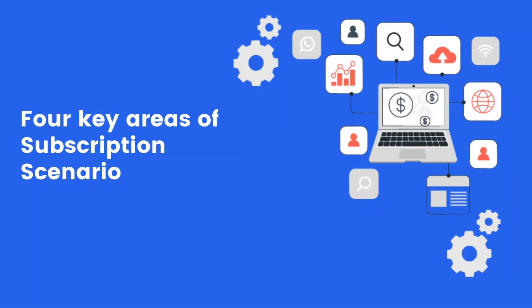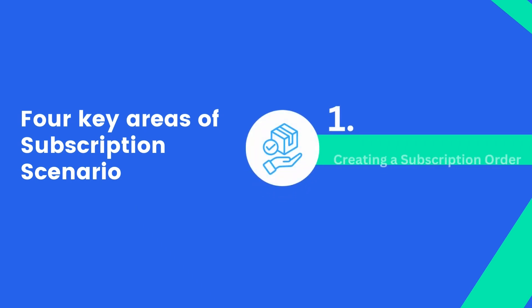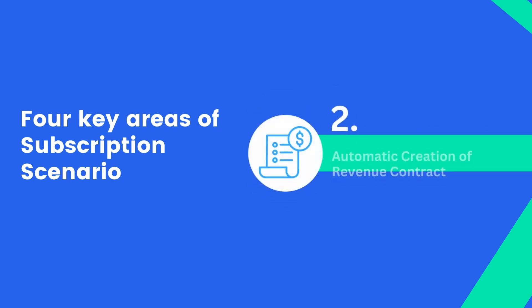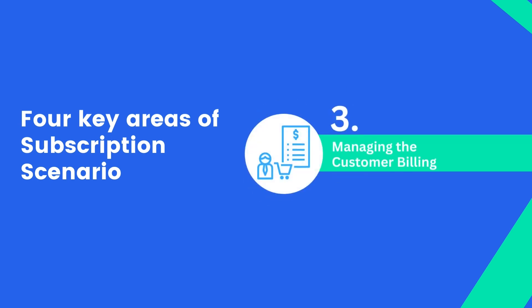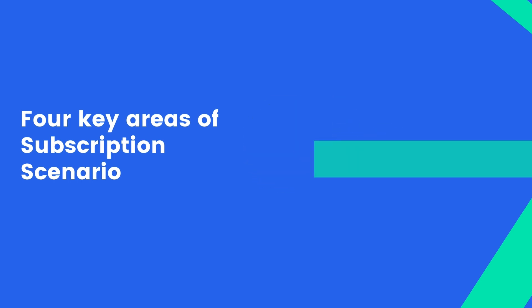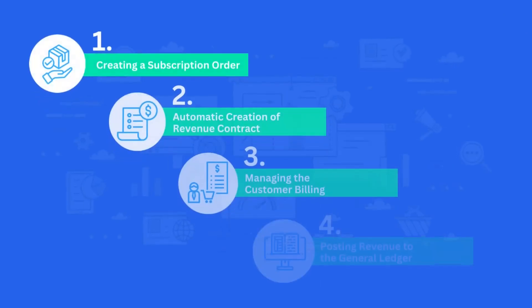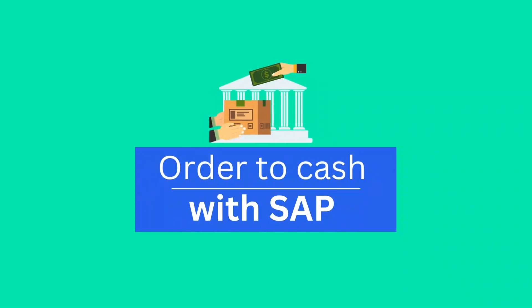These steps include creating a subscription order with your customer, having an automatic corresponding revenue accounting contract created, managing the customer billing, and posting revenue to the general ledger. All of these steps in the order-to-cash process take place in one SAP platform.